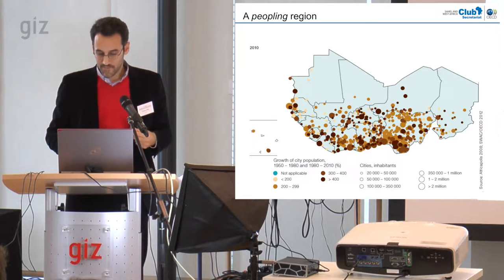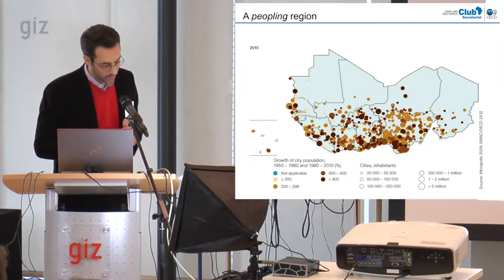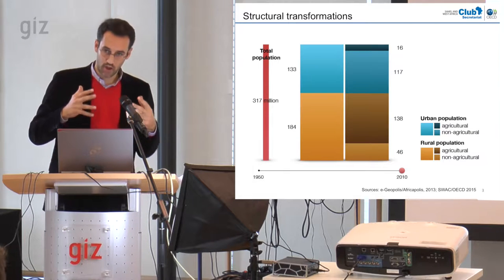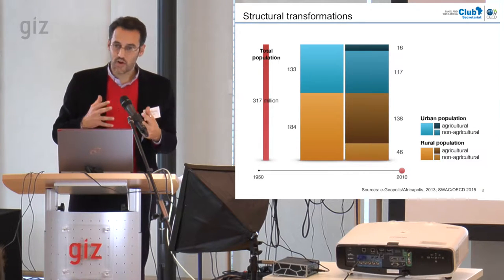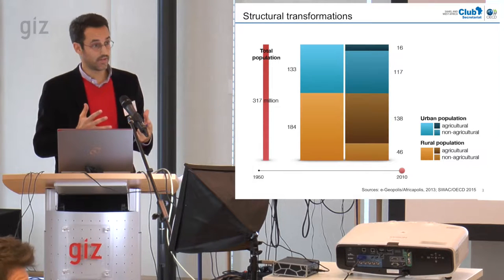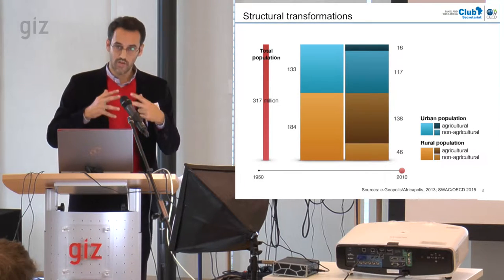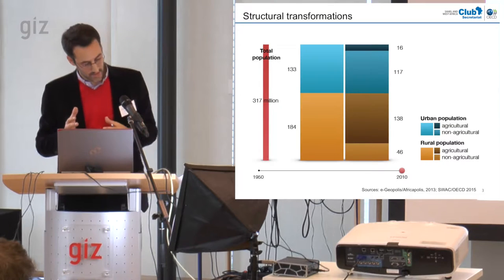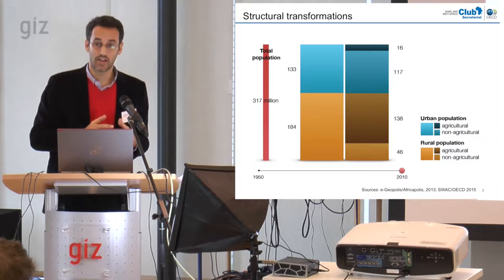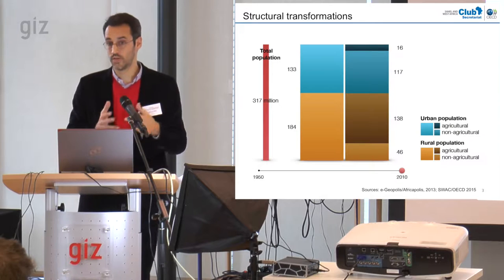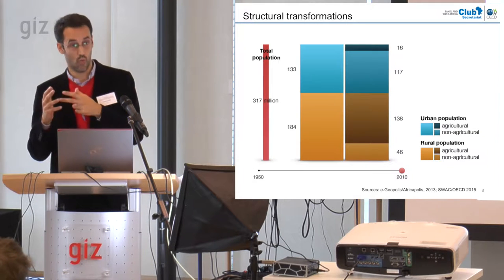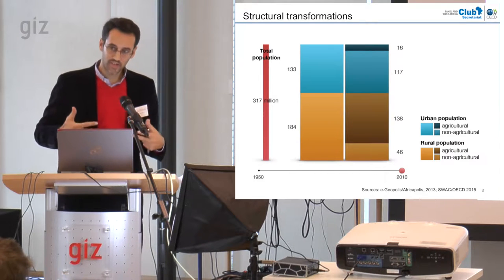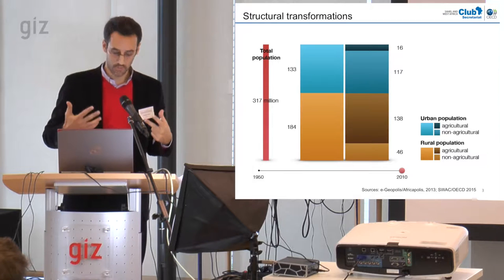We estimated at the SWAC that the share of the population dependent on only agriculture for their living decreased from 90% in 1950 to about 50% today — in 2010 to be precise. That means that 60 years ago we had nine producers for one consumer; today we've got one producer for one consumer. So there are proportionally fewer and fewer agricultural producers per consumer.